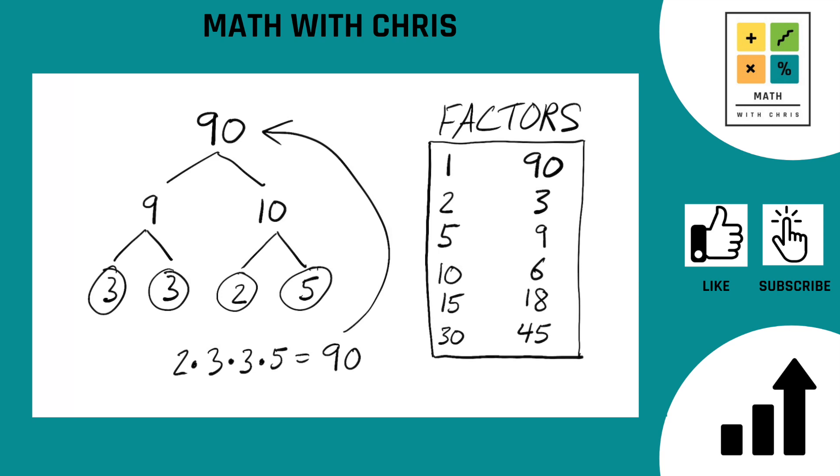The factors of 90 are in order: 1, 2, 3, 5, 6... Did I skip 9? Let me start over. 1, 2, 3, 5, 6, 9, 10, 15, 18, 30, 45, and 90. Nice try 90, but we got you.